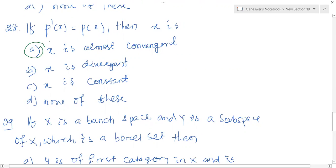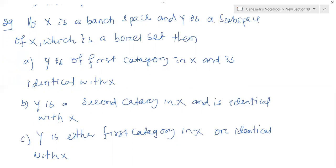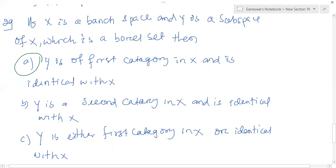If x is a Banach space and Y is a subspace of X which is a Baire set, then Y is the first category and X is identical with X, and Y is the second category in X and Y is identical with X, or Y is either first category in X or identical in X. From the definition of Baire sets, Y is the first category in X and also identical in X, so option A is chosen here.